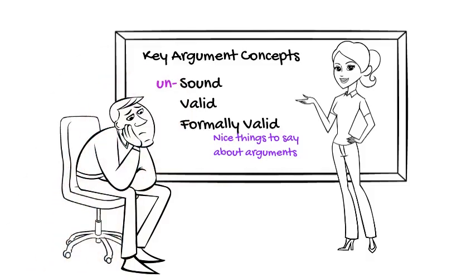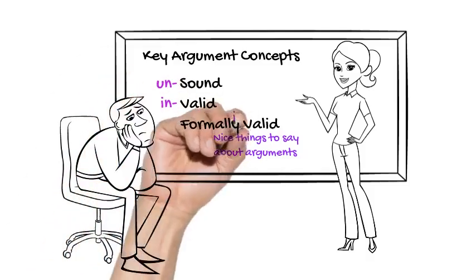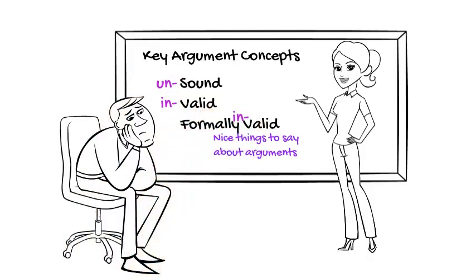And this contrasts with bad things we can say about arguments that they're unsound, invalid, or formally invalid. Whenever this semester we want to say that an argument is good, we're going to characterize it as being sound, valid, or formally valid. And whenever we want to criticize it, we're going to use the contrary terms.